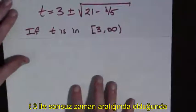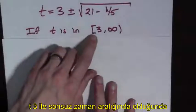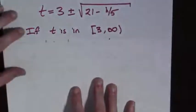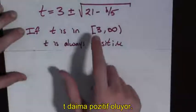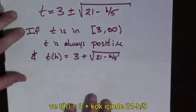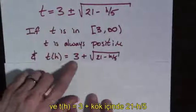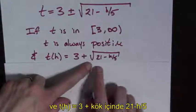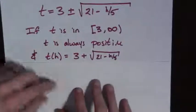So if t is in the interval containing 3 that goes to infinity, t is always positive. It's in this interval, okay? And t(h) then has to equal 3 plus the square root of 21 minus h over 5.